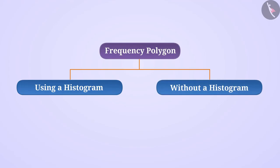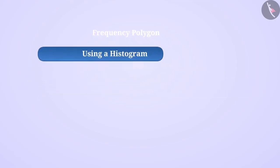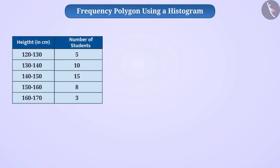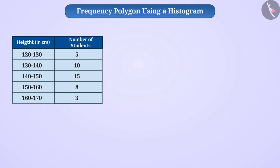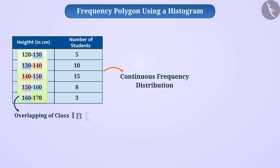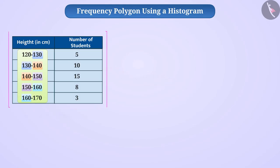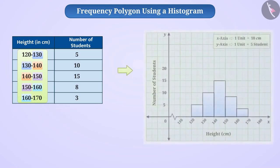Let us learn to draw a frequency polygon with the help of a histogram. Suppose the heights of students of class 9 in a school are presented in a frequency distribution table. This is a continuous frequency distribution because there is overlapping of class intervals. From the frequency distribution table, we can draw a histogram.